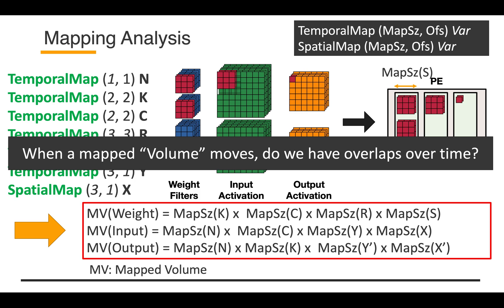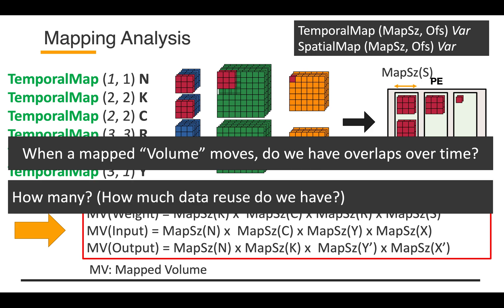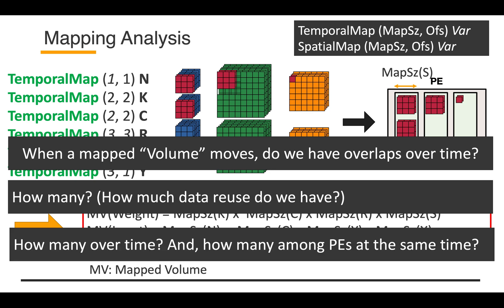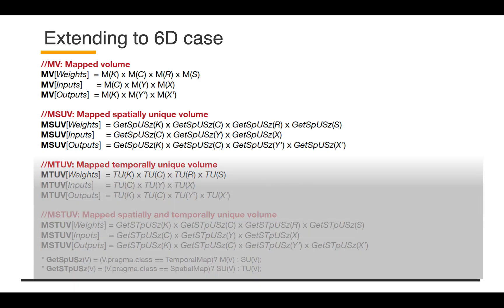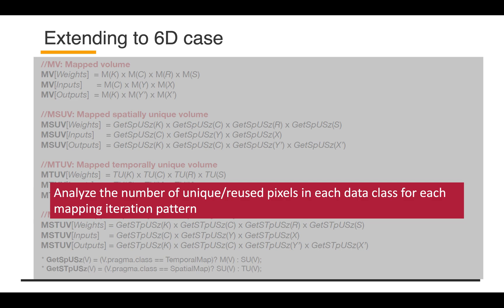Then we want to also know when a map volume moves, which means we move on to the next computation tile, do we have data overlapped over time? That means the data we reuse. And if that exists, how many? How much data we reuse do we have over time and how many across PEs at the same time? The Mysore cost model computes those in analytical way. This is just the eye catch slide. I will not go into all the details about this one. But basically, it analyzes the number of unique and reused pixels or data points in each data class data tensor for each mapping iteration pattern.